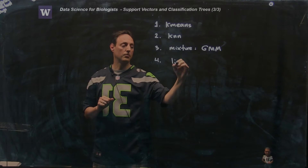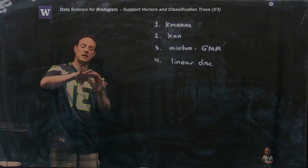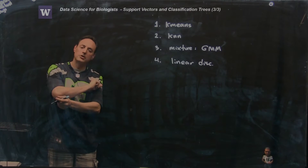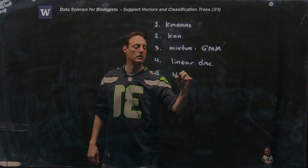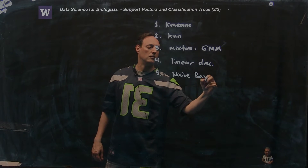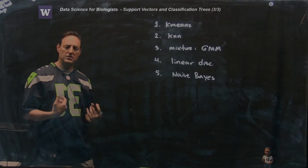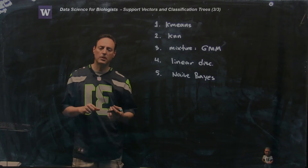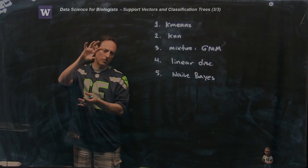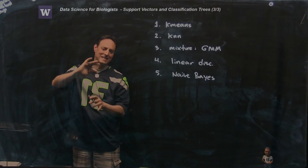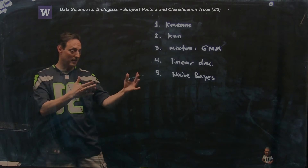We did linear discriminants — the idea of taking some kind of projection and drawing a separation line between the data. There was also naive Bayes, which basically made use of the fact that you know something about the statistics, and you can use Bayes' rule to simply calculate probabilities, build a function which is a ratio of probability of one class versus the other. This gives you a very nice way to separate classes and it's very easy to compute. It works amazingly well, even though it's a very naive thing to do.